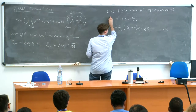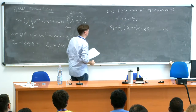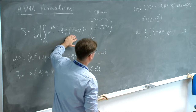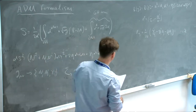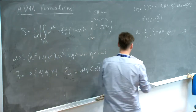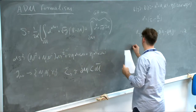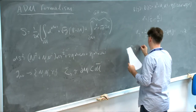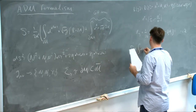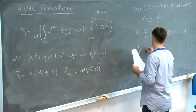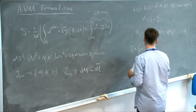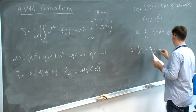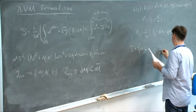So now using this expression, if we just plug it in, you can easily verify that you can write the action as a radial integral over a Lagrangian density, and this Lagrangian density is the following.